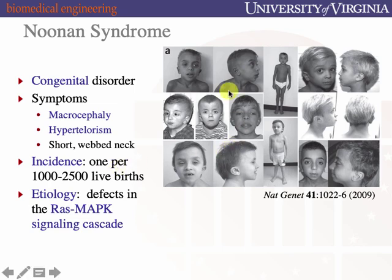A few Noonan syndrome cases on the right-hand side to illustrate the points. Macrocephaly — larger than average heads for stature and size. Hypertelorism — eyes set further apart on the face — as well as short wedged necks. The incidence of Noonan syndrome is one per few thousand live births; to contextualize that, this is on the order of cystic fibrosis.